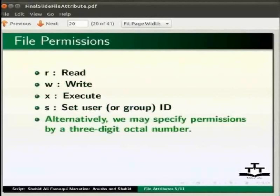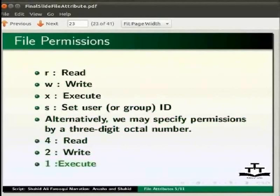Permissions are calculated by adding the following octal values: 4 for read, 2 for write, and 1 for execute.